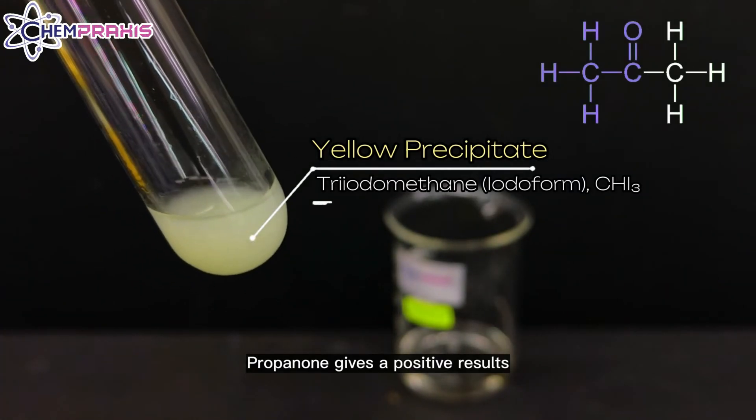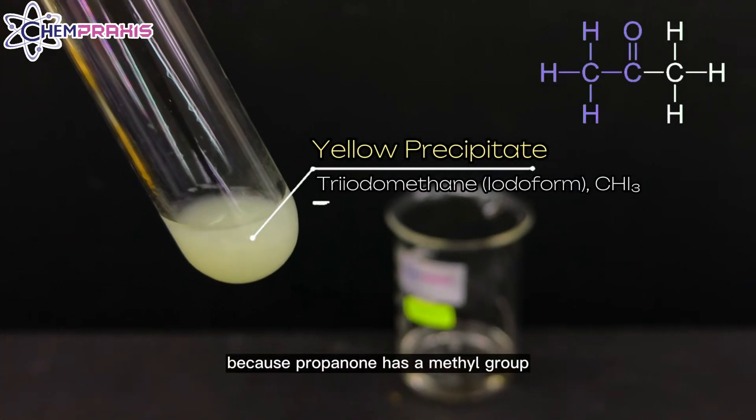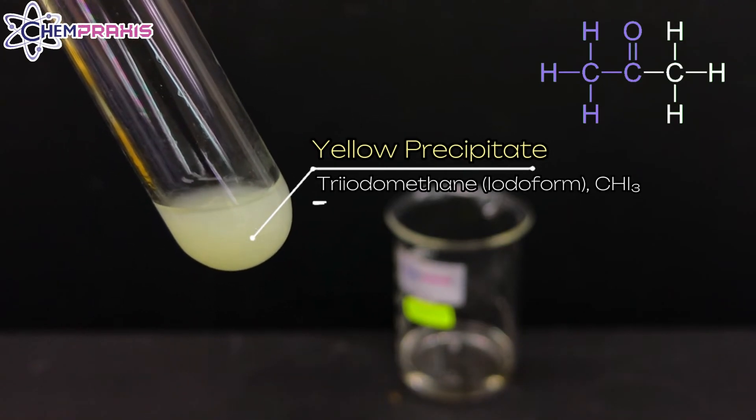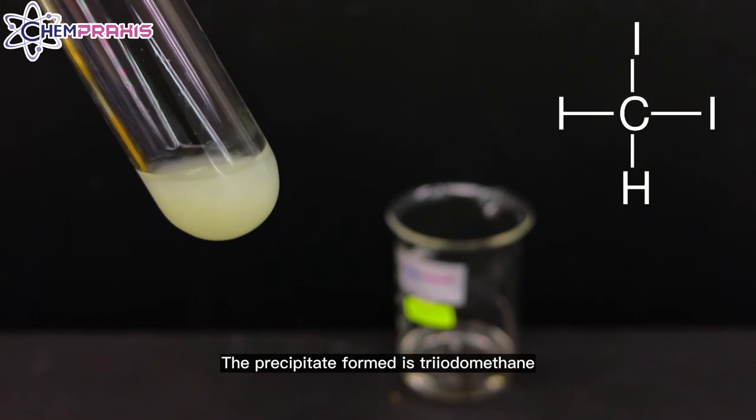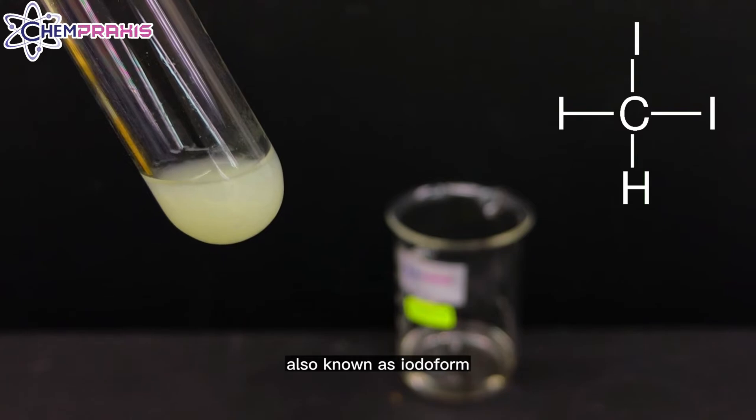Propanol gives a positive result because propanol has a methyl group next to a carbonyl group. The precipitate formed is triiodomethane, also known as iodoform.